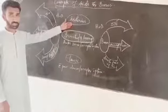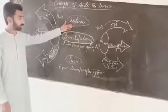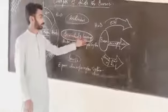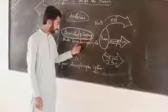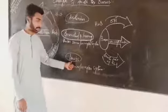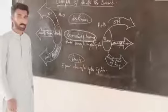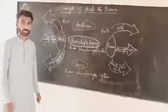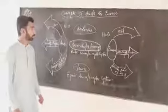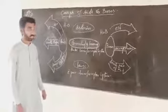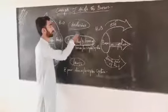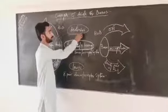The Arrhenius concept of acids and bases, the Brønsted-Lowry concept of acids and bases, and the third one is the Lewis concept of acids and bases. So first of all I am going to tell you about the Arrhenius concept of acids and bases.